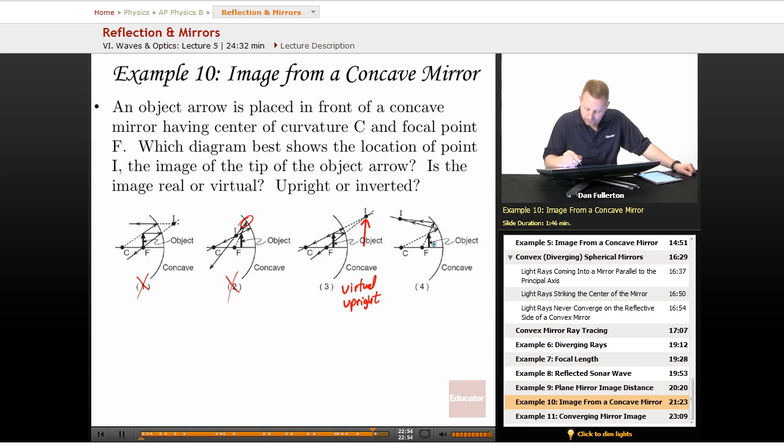Because if I look over here at four, well that's just silly. The line from the center of curvature through the top of the object is going back at a goofy angle. That can't be right either. Three must be our correct answer. The image is virtual and it's upright.